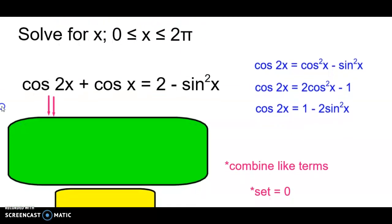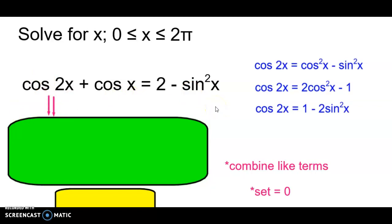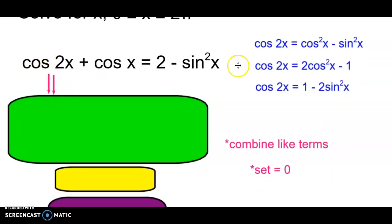Now we're going to solve an equation for x on the interval from 0 to 2π, inclusive. We need to decide which form to substitute in. Right now we have both cosine and sine, so it's best to get down to one trig function. Since we have a minus sine squared available, we can substitute cosine squared minus sine squared for cosine 2x to eliminate the sine terms.